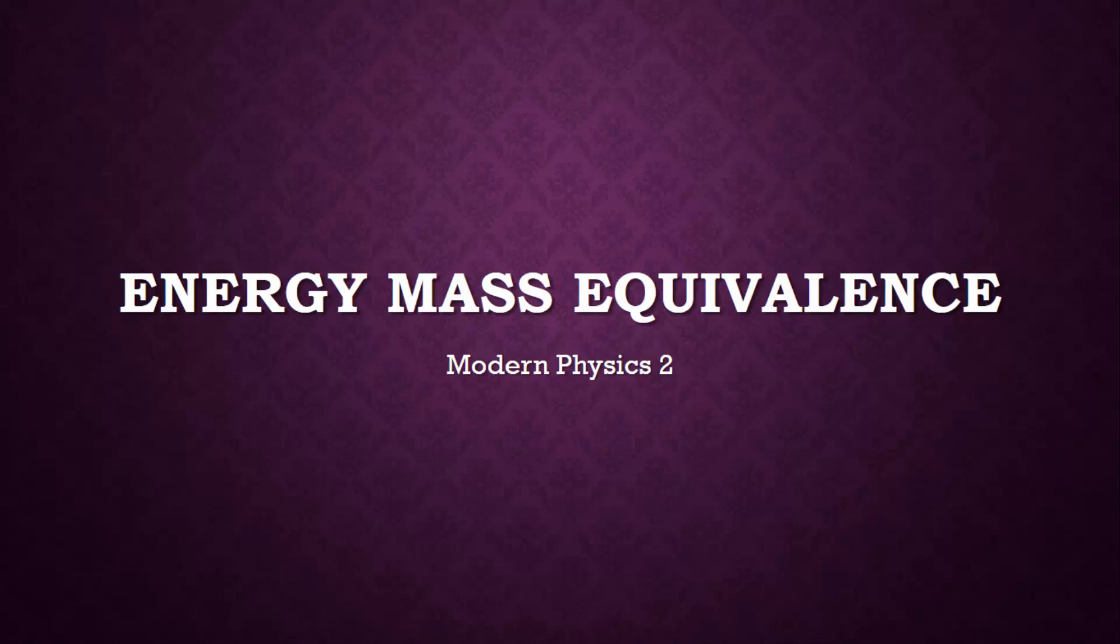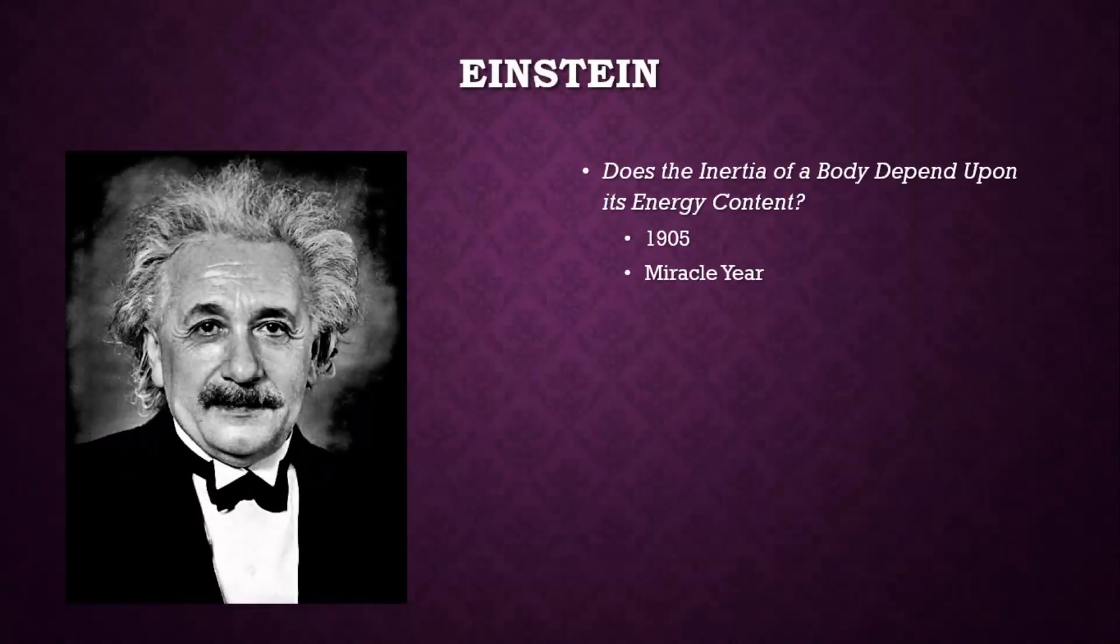The second lesson in modern physics is about energy-mass equivalence. In 1905, Einstein published a paper entitled, Does the Inertia of a Body Depend Upon Its Energy Content?